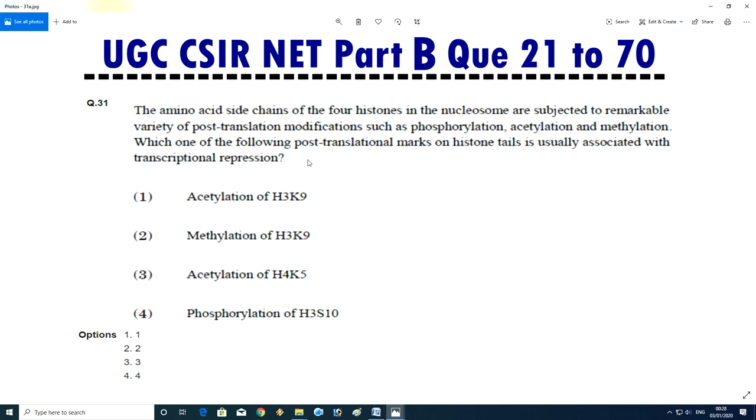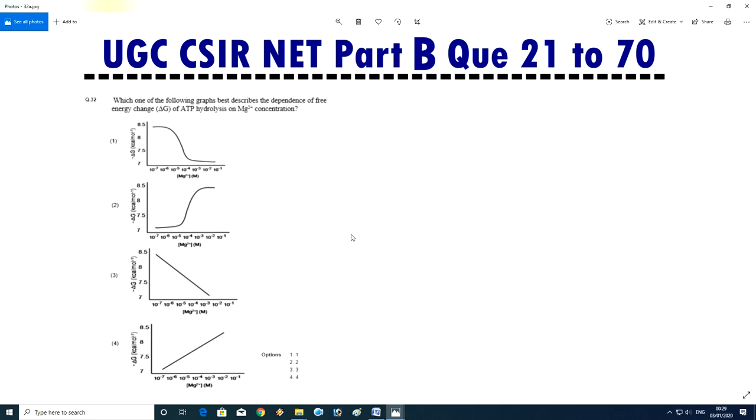Question No.32/33 - The amino acid side chain of the four histone in the nucleosome are subjected to remarkable variety of post-translational modification, such as phosphorylation, acetylation, methylation. Which one of the following post-translational marks on histone tail is usually associated with transcriptional repressor? Answer is second, methylation of H3K9.